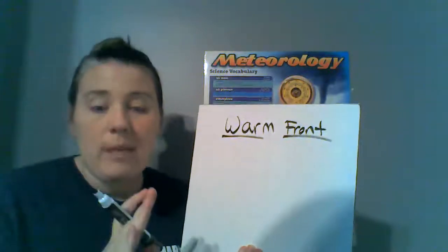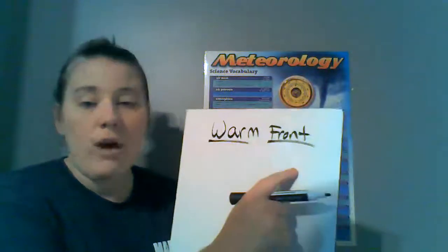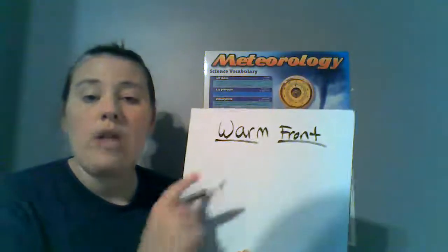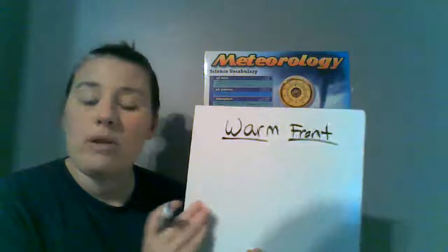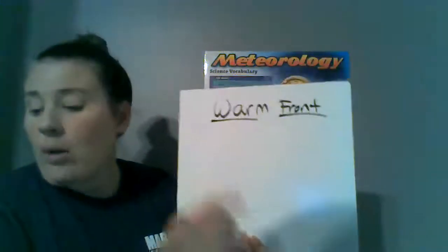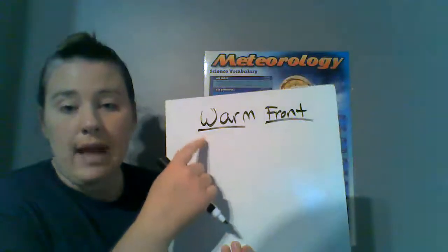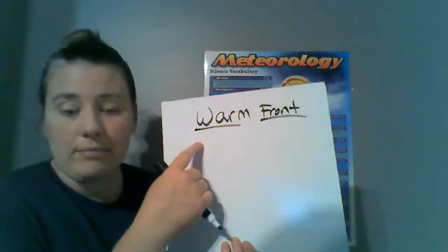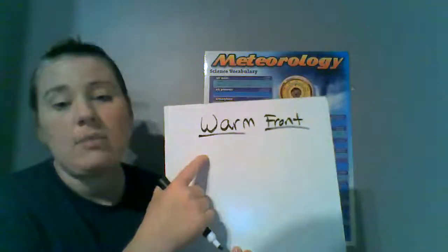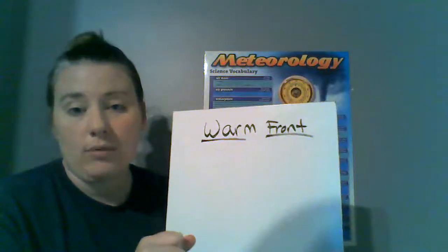There's a line that separates them — that's your front. So if we're talking about a warm front, how do we know which air mass is moving towards the other one and going to push it out of the way? Whatever one is moving is the one that has the name. So if it's a warm front, then the warm air mass is the one that's moving and the cold air mass is the one that's going to be standing still.